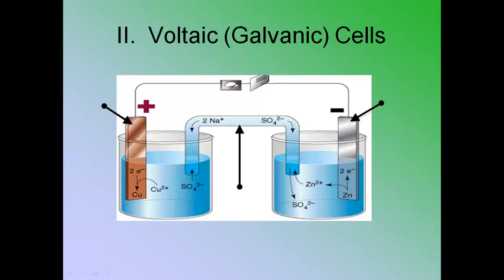Now a Galvanic Cell is basically another name for a battery because really what we're doing here is we're setting up two little cells that are going to transfer electrons back and forth between them. So I'm going to show you the basics of a Galvanic Cell and then I'm going to give you a bunch of definitions to know.